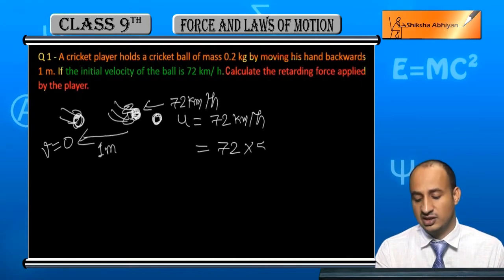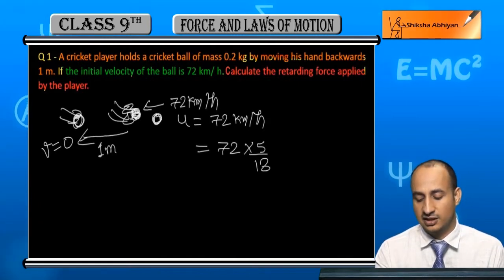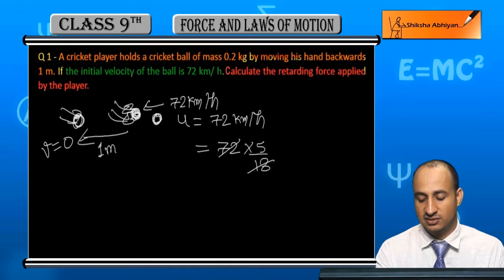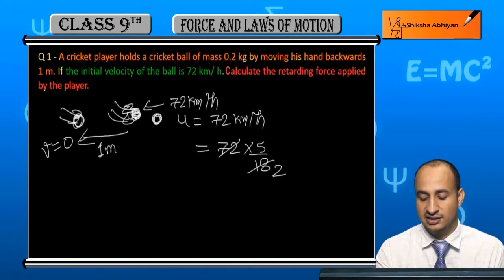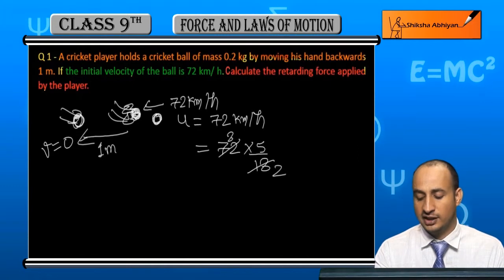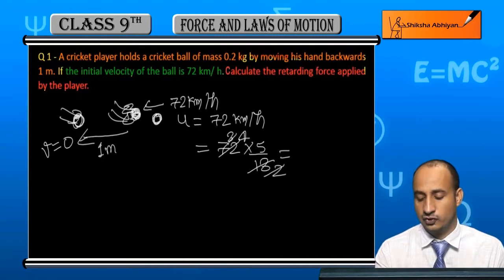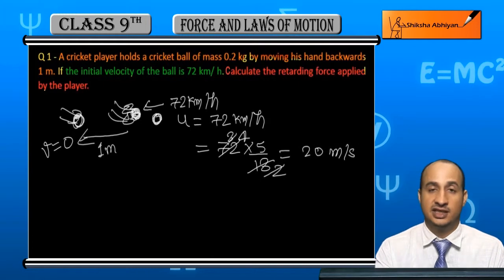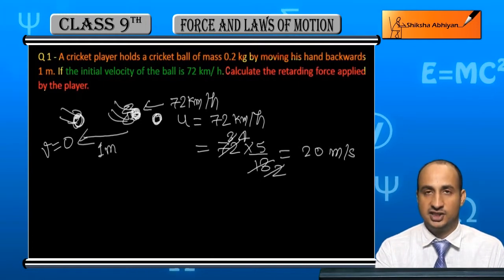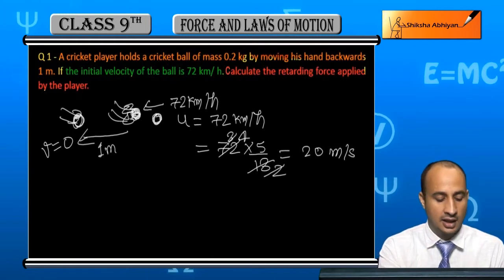Converting 72 km per hour to meters per second: multiply by 5 divided by 18, which gives us 20 meters per second. So the initial velocity U is equal to 20 meters per second.